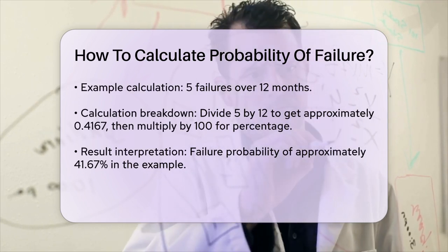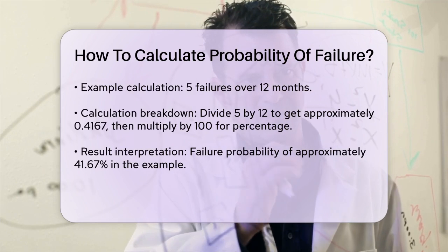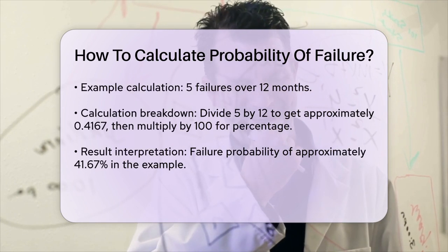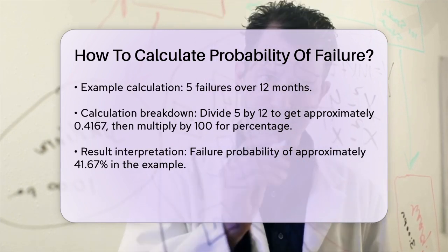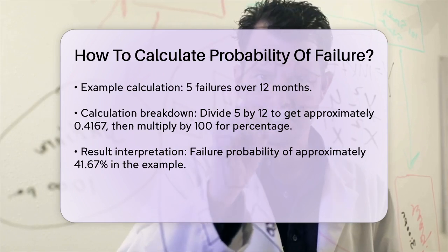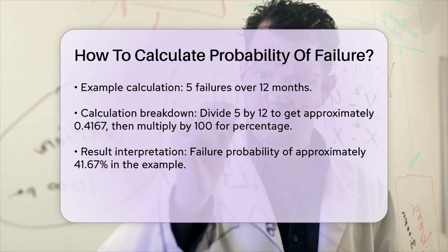To solve this, first divide 5 by 12, which gives you approximately 0.4167. Then, multiply this result by 100 to convert it to a percentage. 0.4167 times 100 equals 41.67%.